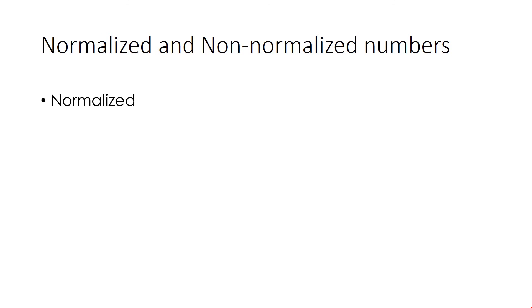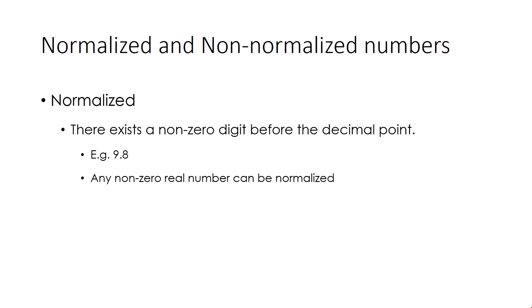Normalized numbers: The number in which there exists a non-zero digit before the decimal point is called a normalized number. For example, 9.8 in which we have number 9 before decimal point which is non-zero. Any non-zero real number can be normalized.